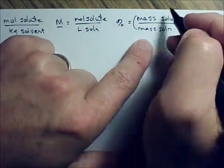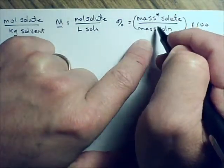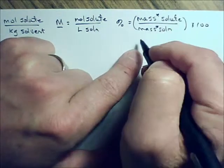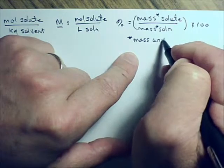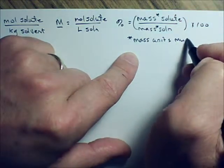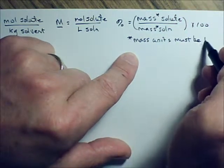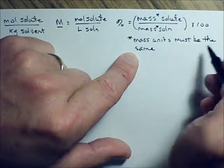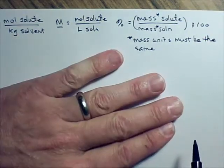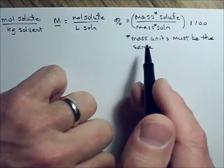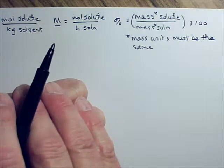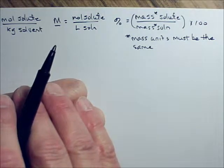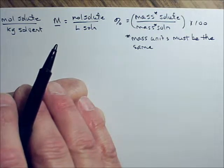These mass units always have to match — they must be the same. So if the mass of your solute is in grams, then the mass of your solution needs to be in grams. If the mass of your solute is in milligrams, the mass of your solution needs to be in milligrams. That's why you sometimes have to do conversions to get from one to the other.